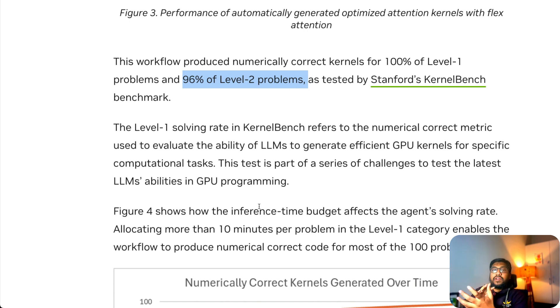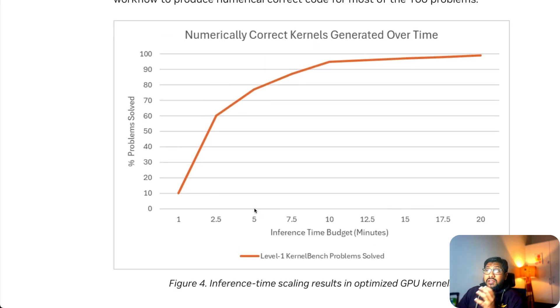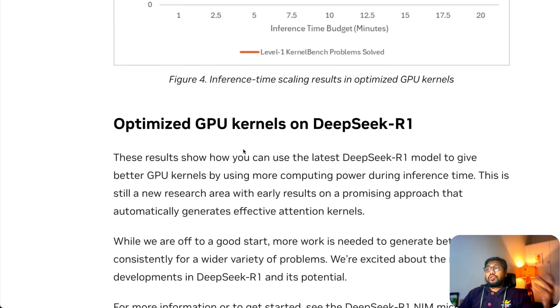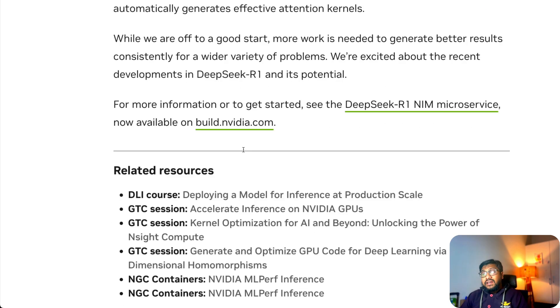If you see here, this is the most important part of this entire presentation. As they increase the inference time budget, you can see the accuracy of this system solving level one problems has increased. If the inference budget was only 2.5 minutes, then it managed to solve 60% of problems. But when the inference time was 20 minutes, it managed to solve 100% of problems. So the most important thing is how long you are going to let it think, and that has been the key here for NVIDIA to create a Devin killer or a Devin-like system using one of the simplest workflows that you can see on the internet.